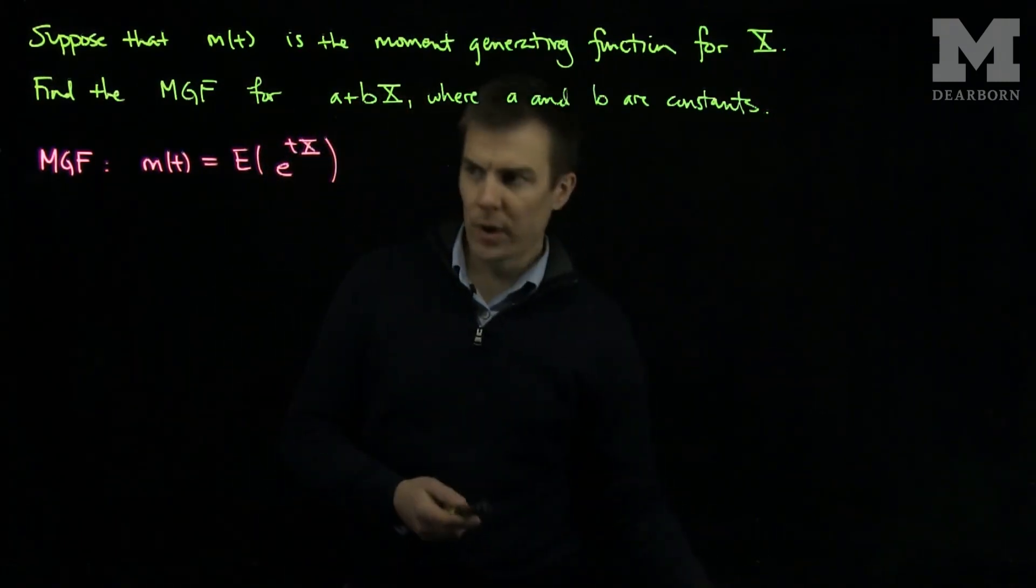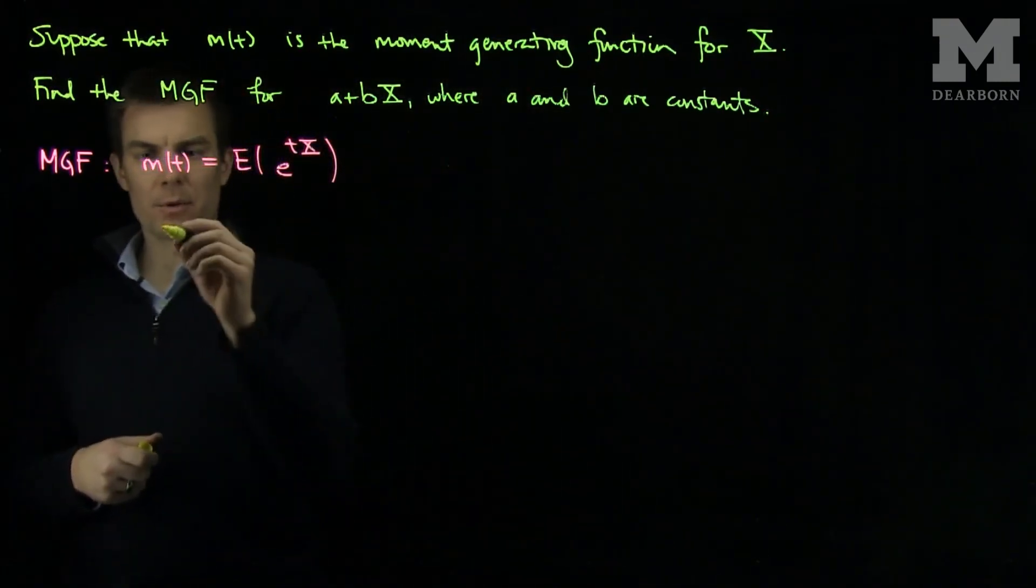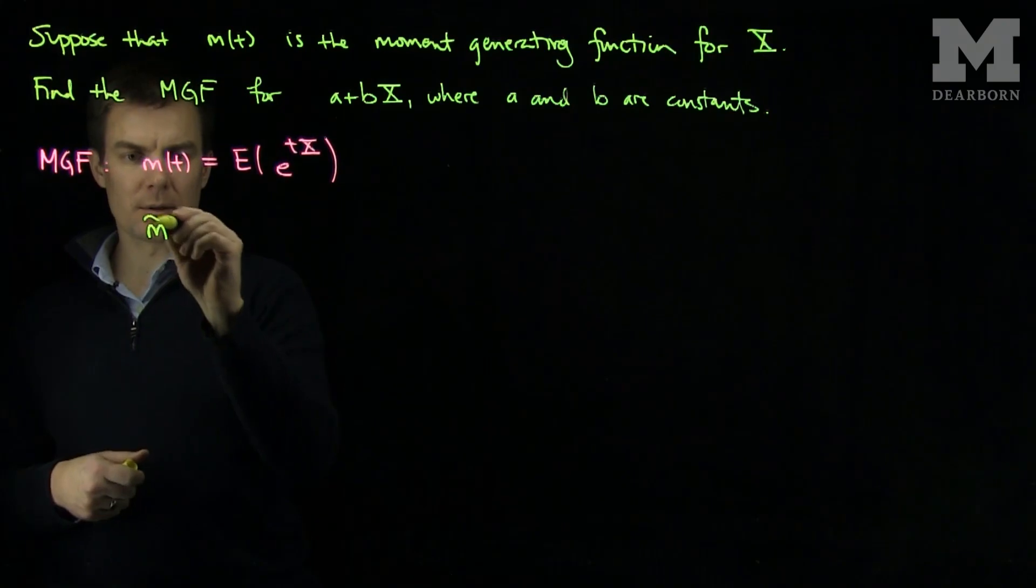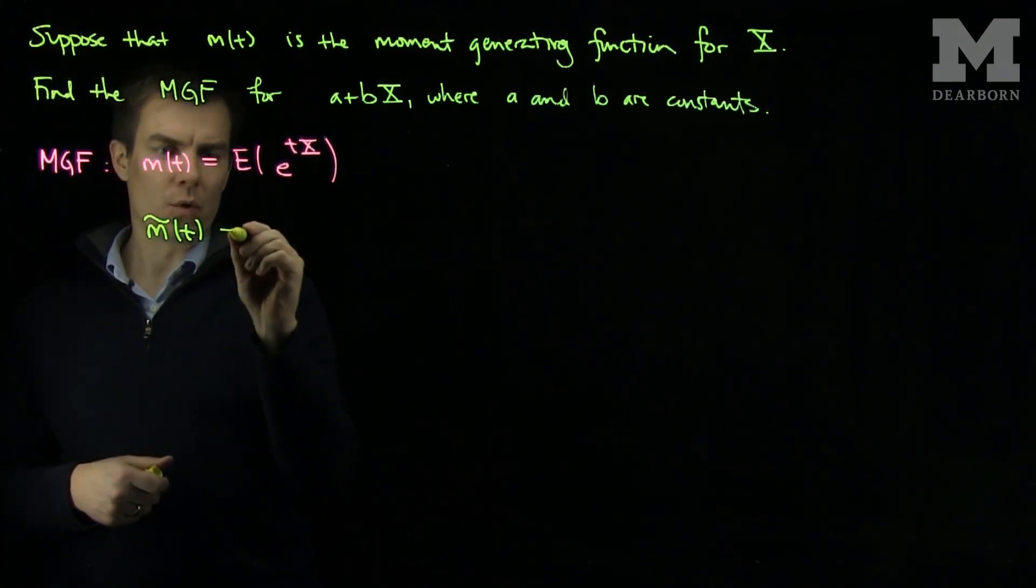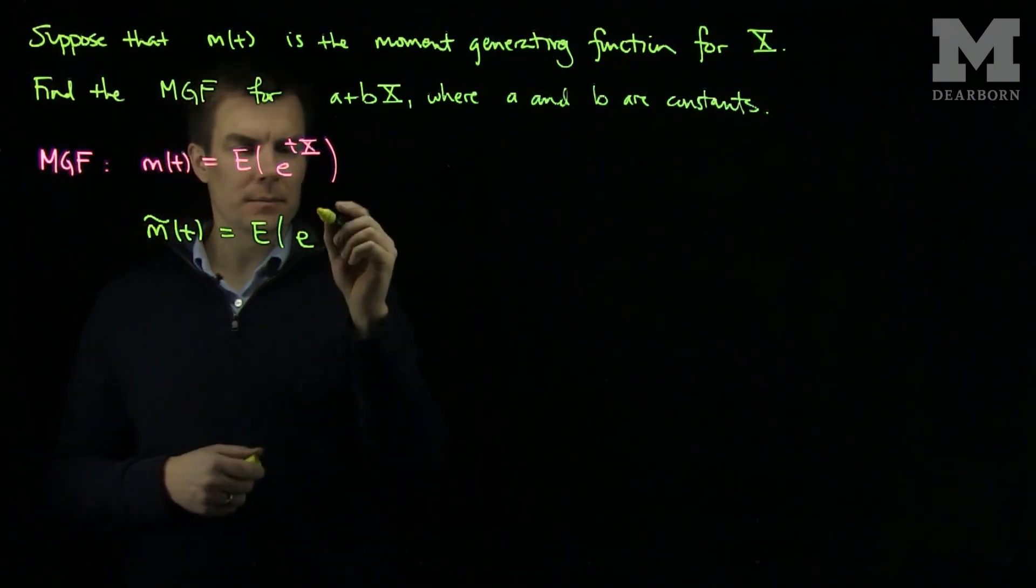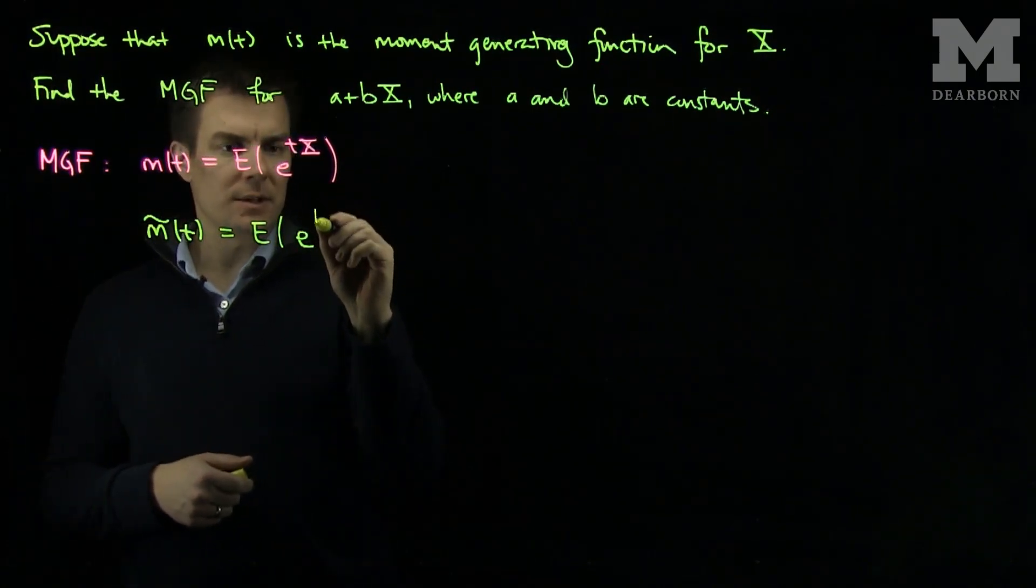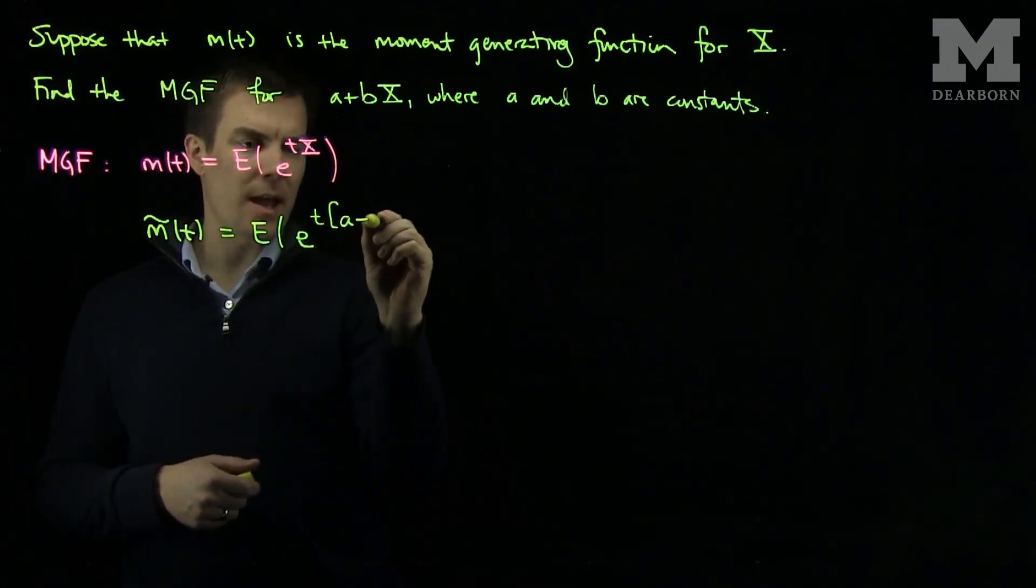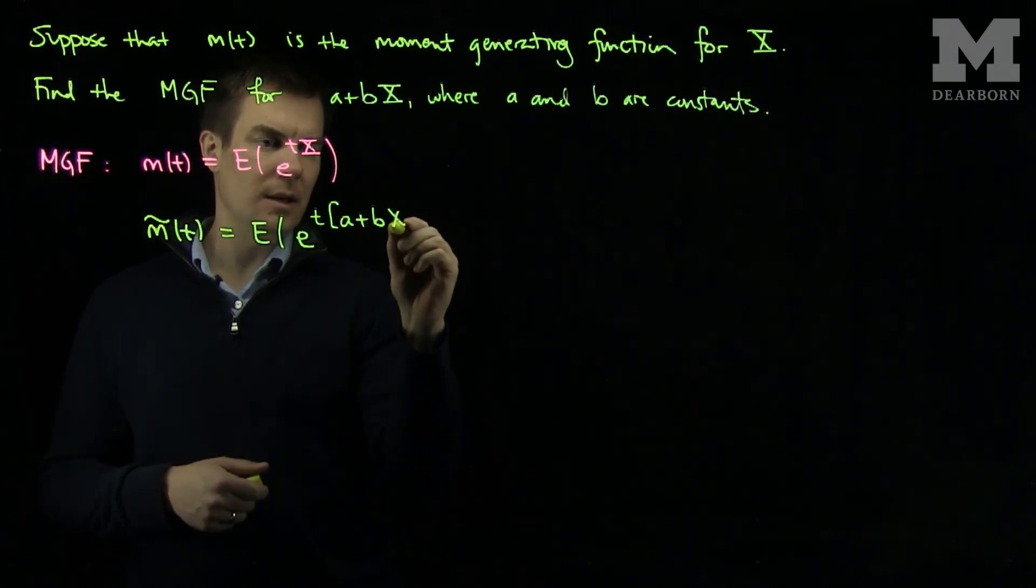So what we have is we'd like to find the moment generating function, let's call it m tilde of t, which will be the expected value of e to the t times (a + bX).